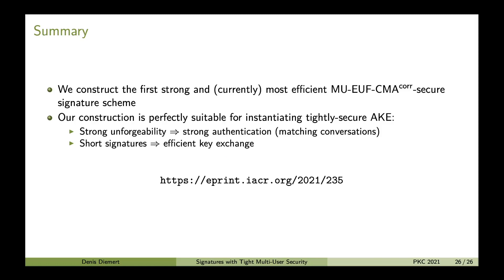To sum everything up: we construct the first strongly and currently most efficient multi-user secure signature scheme with adaptive corruptions that is tightly secure. Our construction is a perfect candidate for instantiating tightly secure authenticated key exchange because strong unforgeability gives us a strong authentication notion in the sense of matching conversations, and short signatures give us an overall efficient key exchange. Thank you very much for watching, and if you want to know more about our work, please consider reading our paper — the link is on the slide.